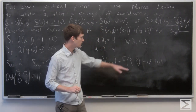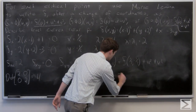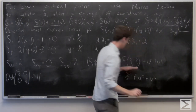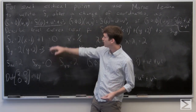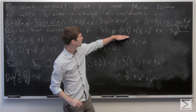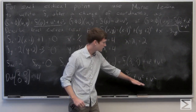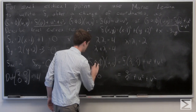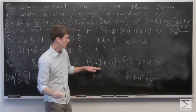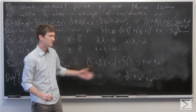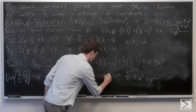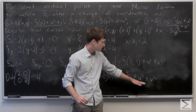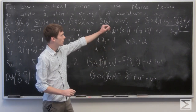We can calculate f at the point (1/2, -1/2) by plugging those values into our function f(x, y). We get f composed of phi at (u, v) equals 9/2 plus u squared plus v squared.